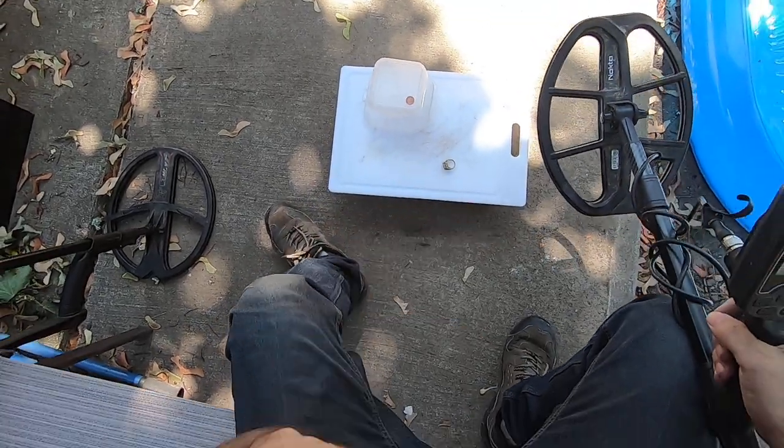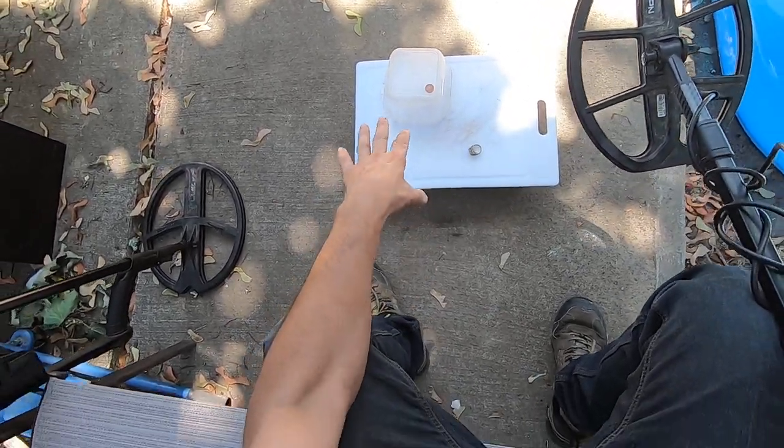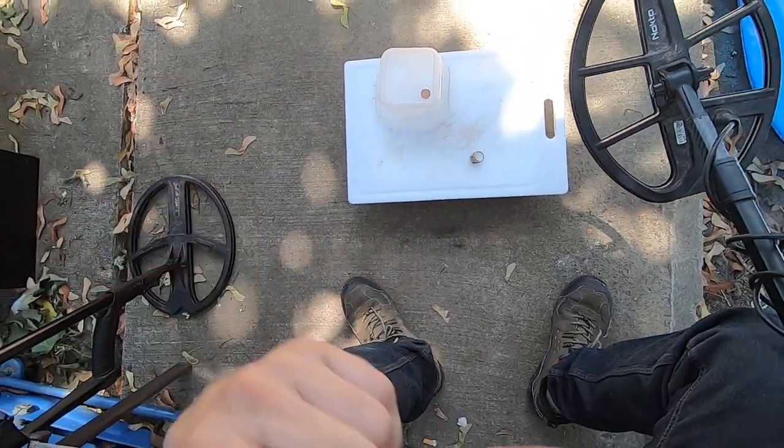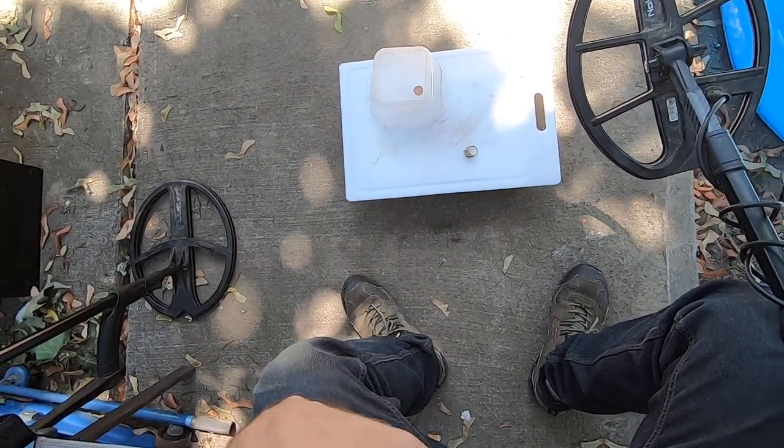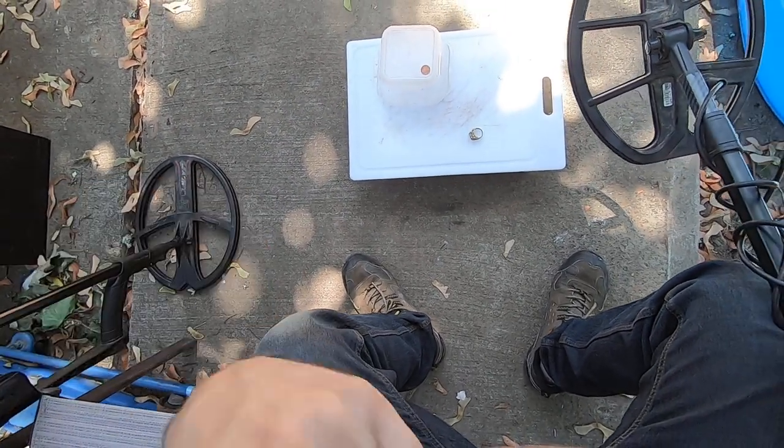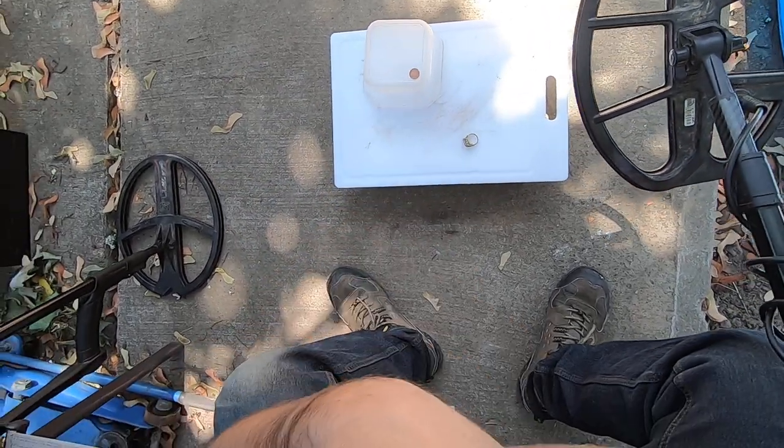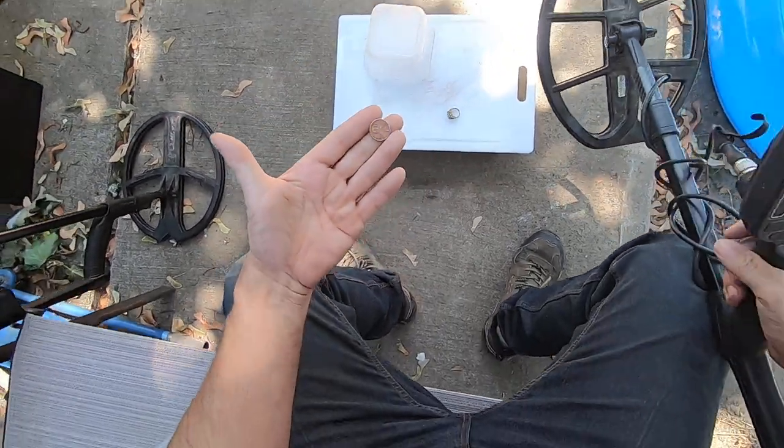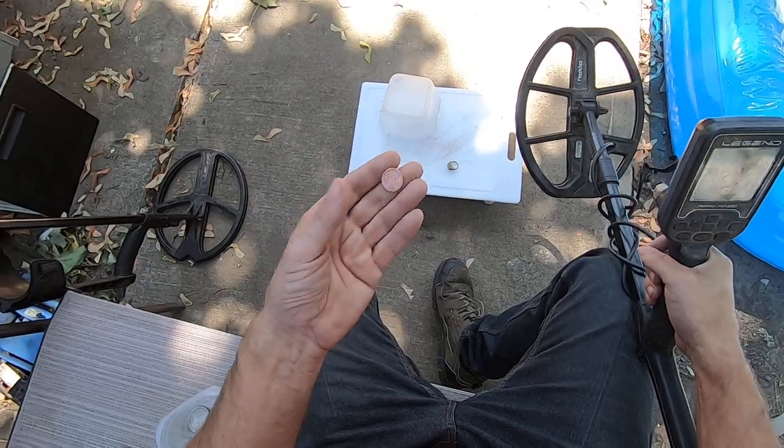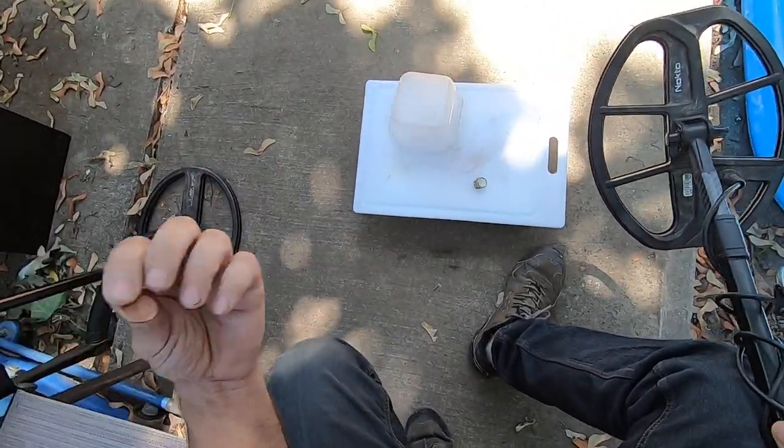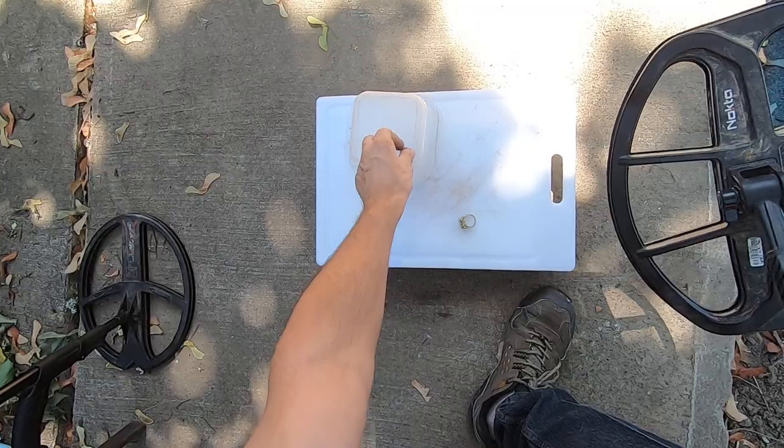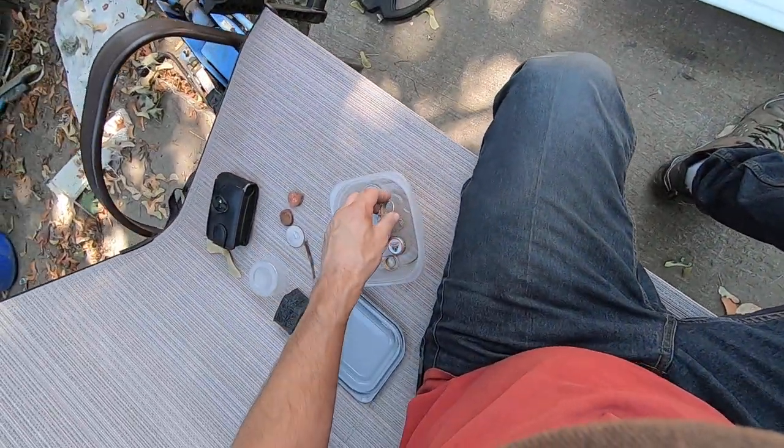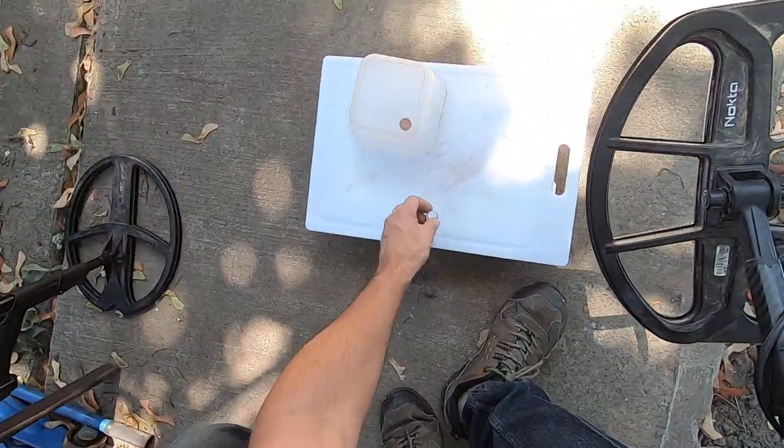The only way to unmask targets is sometimes just getting that mask out of there, digging that mask out. And that takes effort. Notching a target is not magically going to make this zinc penny disappear. The only way to make this really truly not mask any more targets is to get the zinc penny out of the ground. I don't mind digging up zinc pennies because they're gold, they're rings once in a while and they're jewelry once in a while. But the bottle caps, I'll put this silver ring in here.